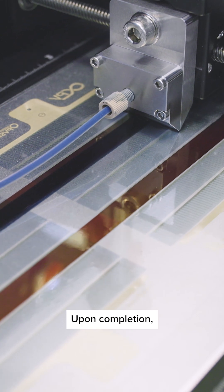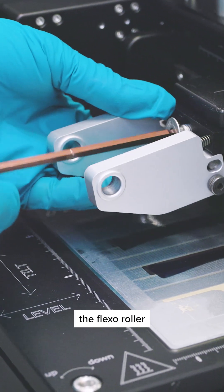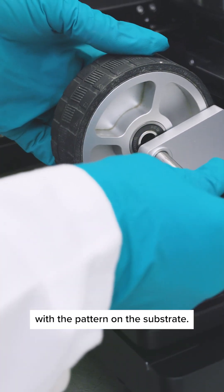Upon completion, it's time to print silver for the processing of the back electrode. Start by attaching the flexoroller and aligning it with the pattern on the substrate.